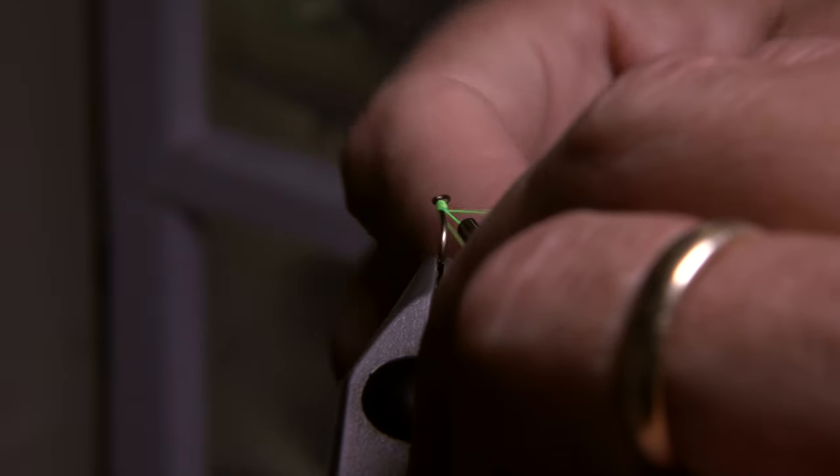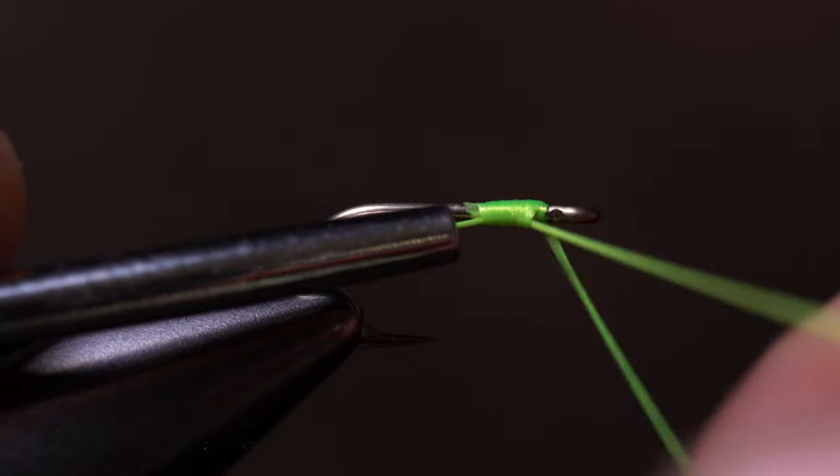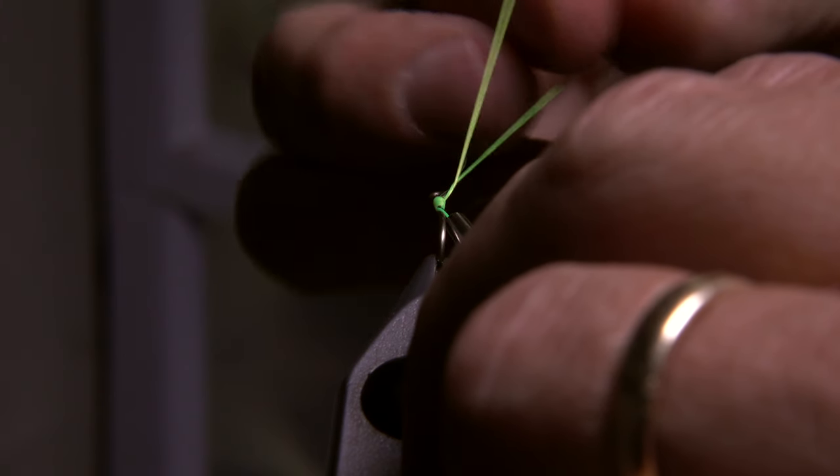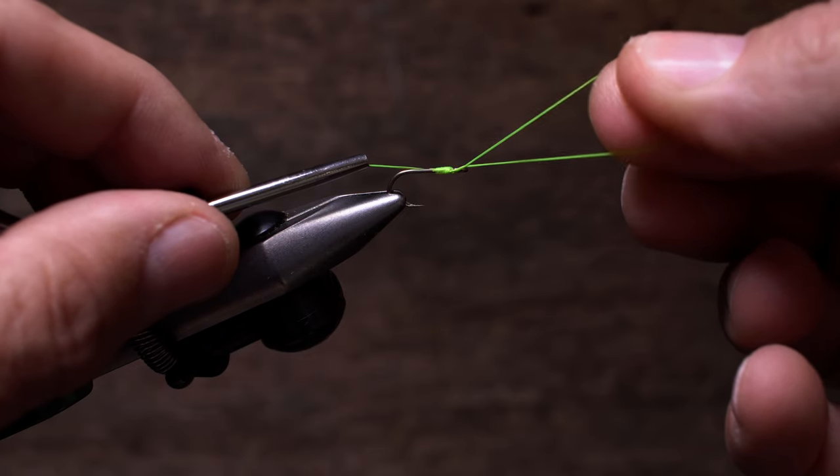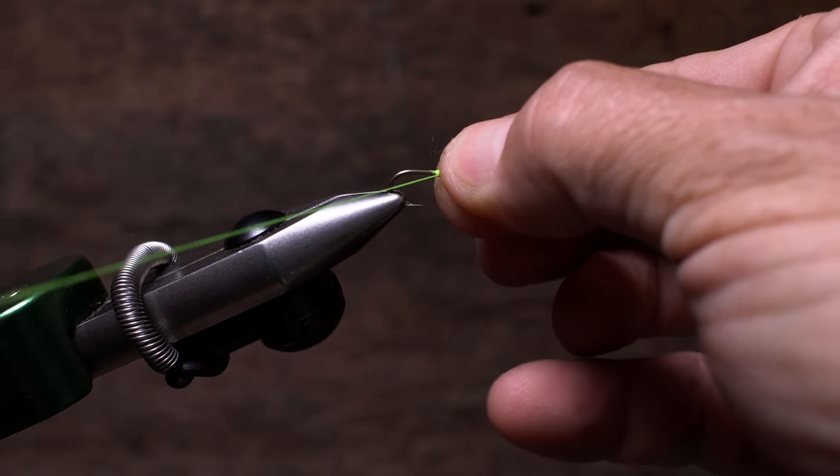Notice how the thread coming off your index finger crosses over top of the thread from the bobbin. Then pull your middle finger free from the loop and squeeze the end between your thumb and index finger. Pull rearward on the bobbin to close the loop and complete the whip finish.